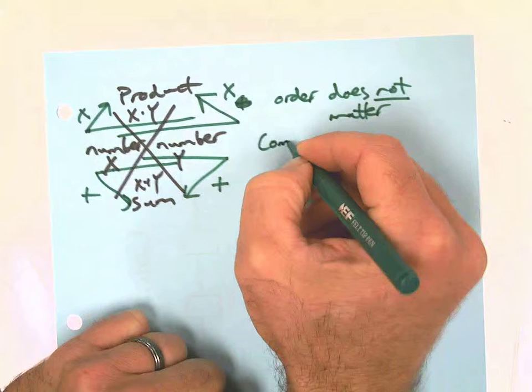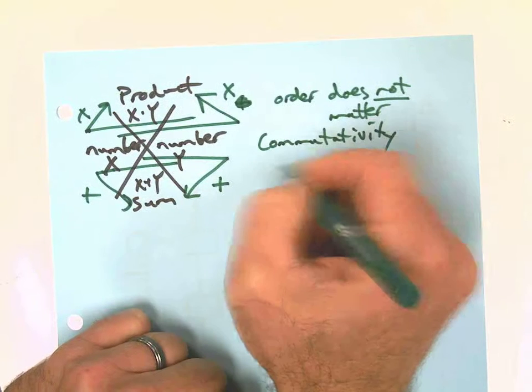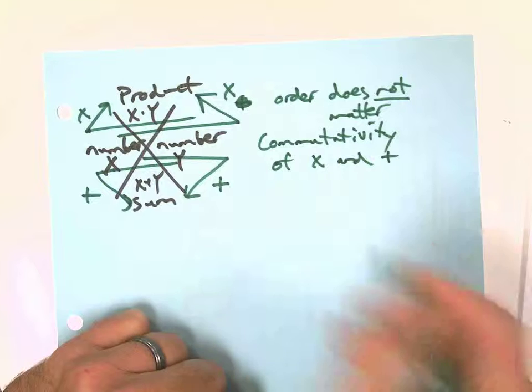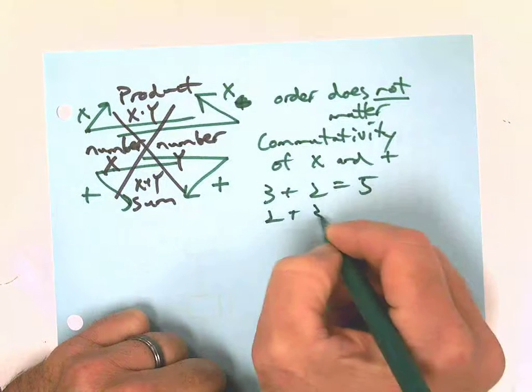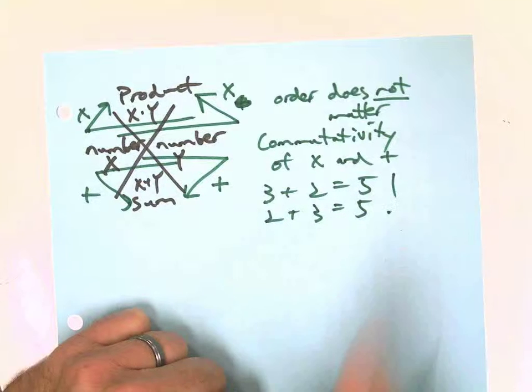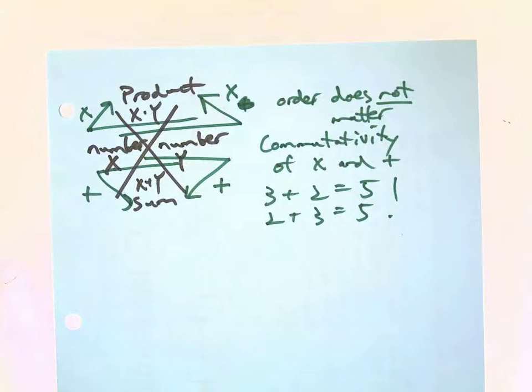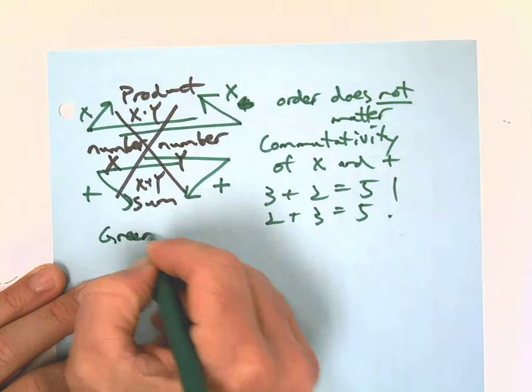Okay, and order does not matter, right? Because it's commutative. The commutative property, commutativity of multiplication and addition. If you want to prove it, just think of this: 3 plus 2 equals 5, 2 plus 3 equals 5, right? Order does not matter. So that's why my green arrows go both ways to get products and sum.